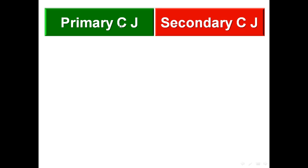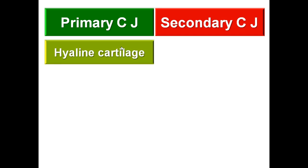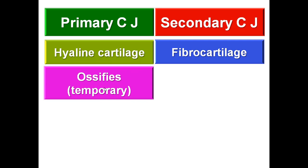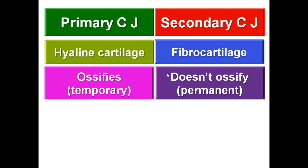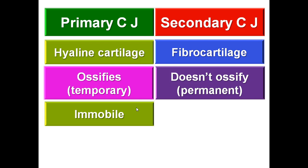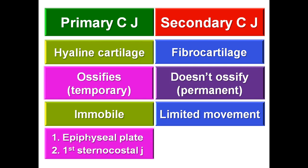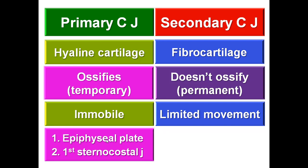Comparing primary and secondary cartilaginous joints: in primary cartilaginous joints the cartilage is hyaline — it ossifies, so the joint is temporary and immobile. In secondary cartilaginous joints the cartilage is fibrocartilage — it doesn't ossify, so the joint is permanent and permits limited movement. Examples: primary — epiphyseal plate, first sternocostal junction; secondary — midline joints.